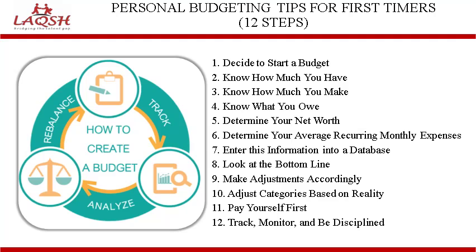The seventh step is to enter this information in a database. This helps in remembering the entries made by an individual and makes a person more responsible towards money. The eighth step is to look at the bottom line. This number will tell you whether you are overspending or underspending.